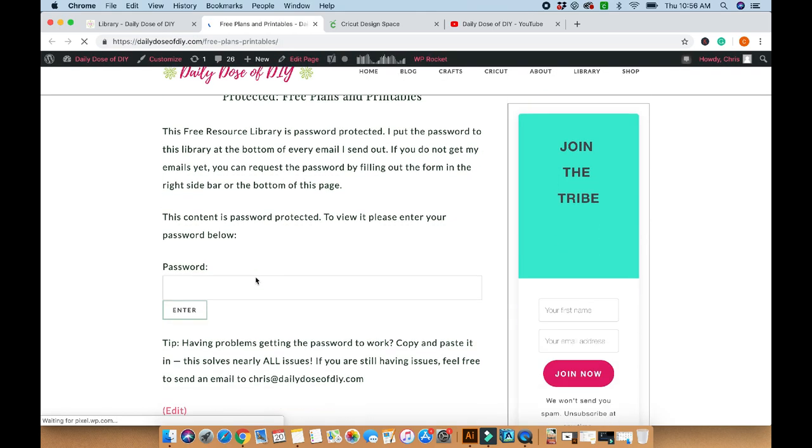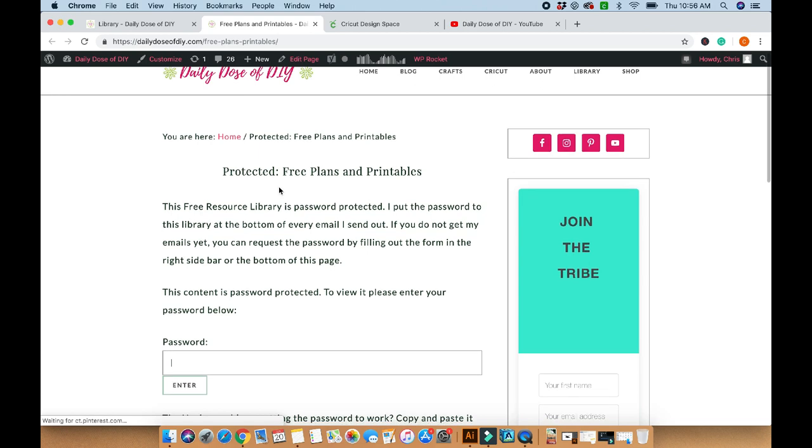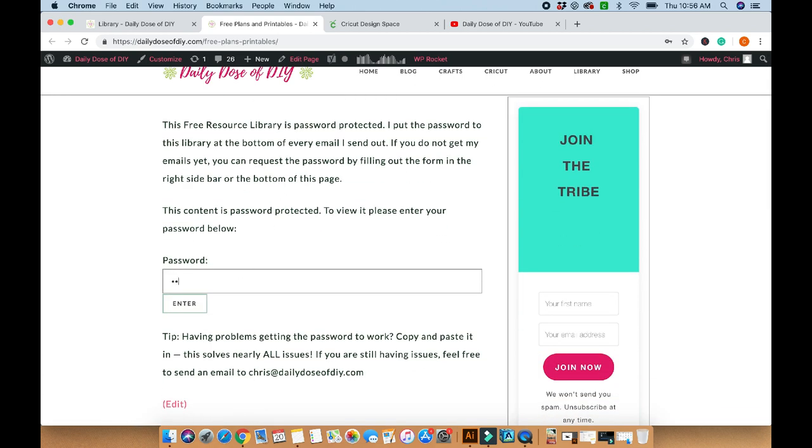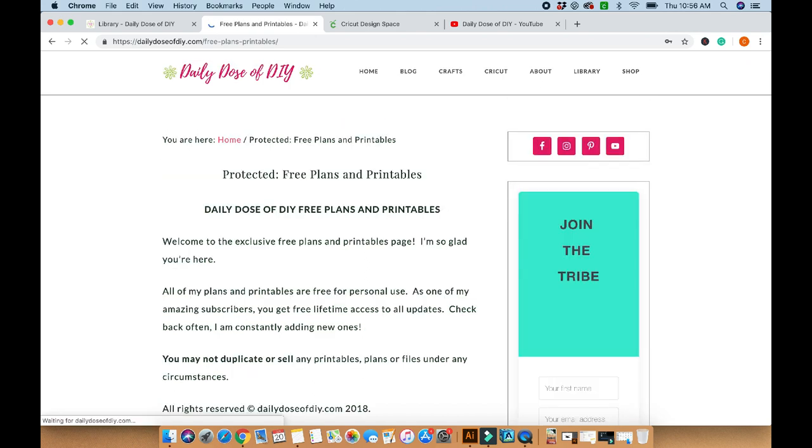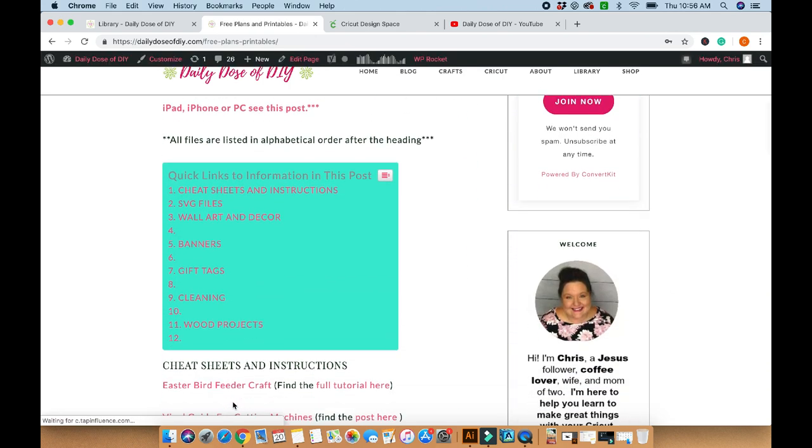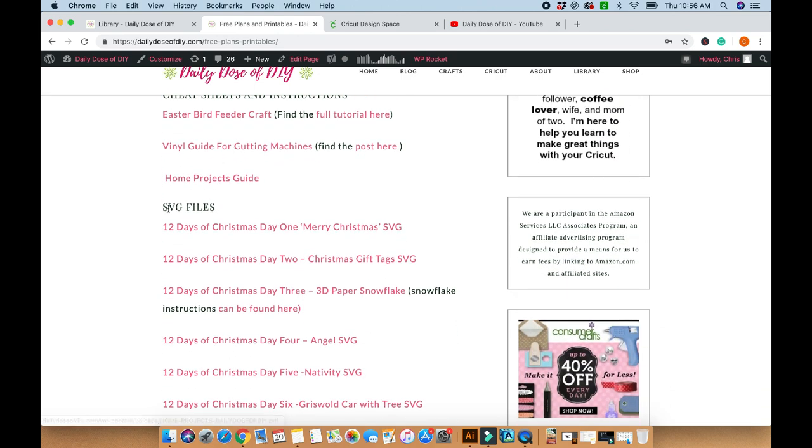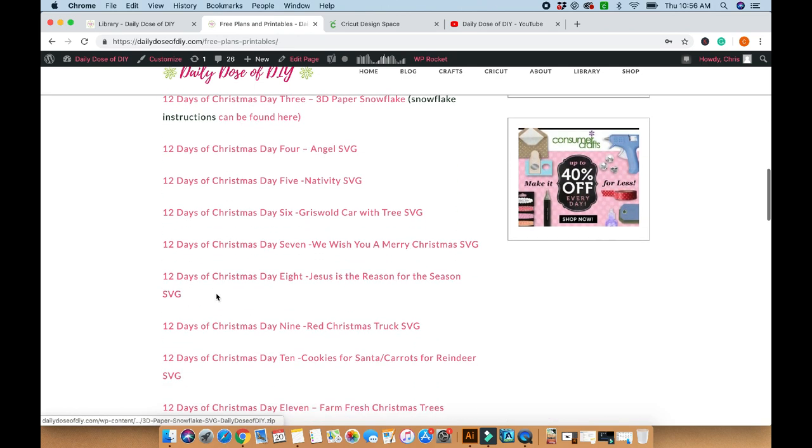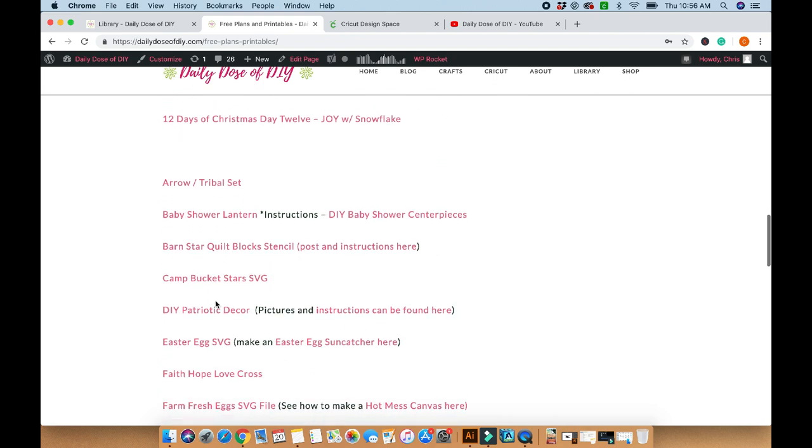So once you have that, you just go into the library. It will ask you for the password. Type that in. And then it will bring you into the library where you can see SVG files. They're in alphabetical order. So we're going to go down to the Camp Bucket Stars SVG. As soon as you click on it, the download automatically starts.